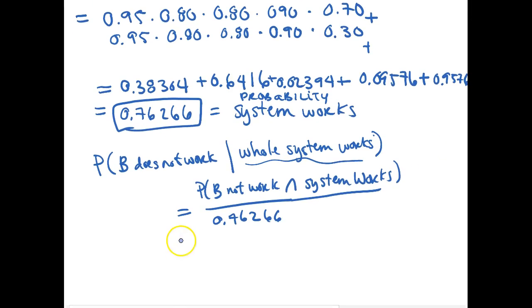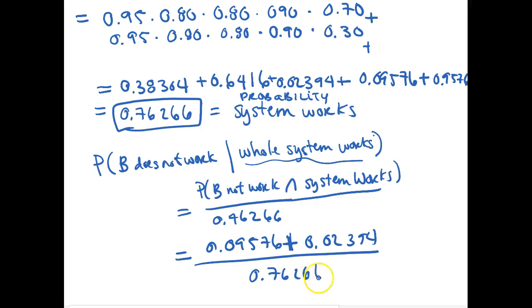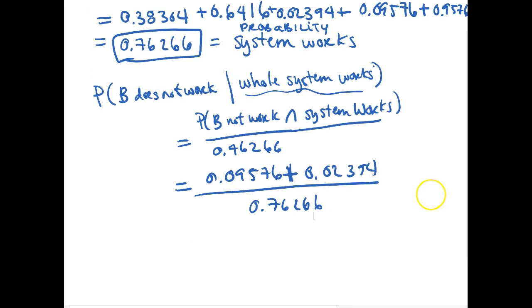The numerator is 0.09576 plus 0.02394 — adding those two likelihoods together — over 0.76266. So the likelihood that B does not work given the whole system works is equal to 0.1570. Hopefully this video helped you understand how to solve this problem.